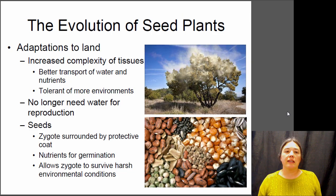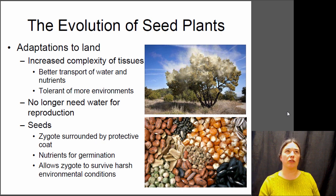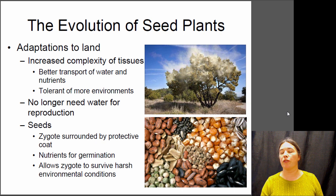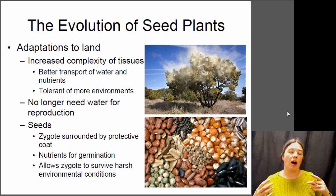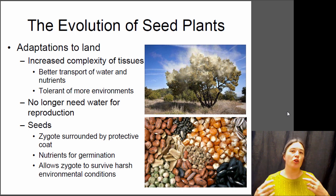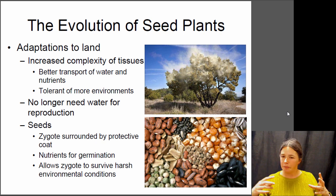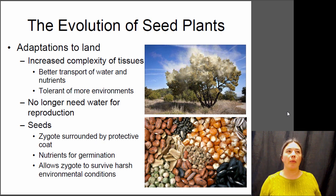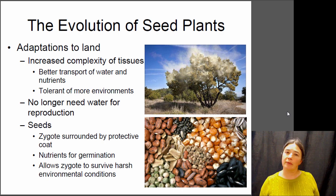Now we have the seed plants. Seeds are a very important adaptation to land because a seed allows a plant to survive through harsh environmental conditions — dry or cold. Seed plants have also evolved a way to get the male gamete to the female gamete without water, through pollen. If you have an allergy to pollen, you're basically allergic to plant sperm. Because they no longer need water for reproduction and have better water transport systems, they can colonize many habitats that ferns and mosses can't, including very dry places.